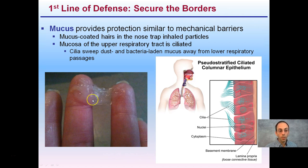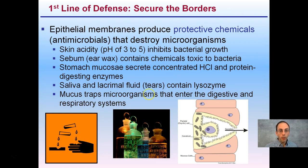This sticky substance is what's trapping those organisms that we may breathe in, and they can then be swept up and ultimately digested in the stomach. The stomach itself has its own line of defense and produces chemicals — particularly acid. Our skin is slightly acidic at a pH of 3 to 5, and that is able to inhibit bacterial growth.